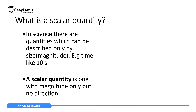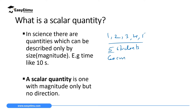In science, when we measure physical quantities, sometimes we get values which only describe the size or the magnitude. Magnitude in this case is just a numerical value — like one, two, three, four, five. For example, you can say we have five students, but you have not mentioned the direction in which they are facing. Or you can say my desk is 60 centimeters in length — you've only mentioned the size, not the direction. Quantities which only have magnitude but no direction are called scalar quantities.